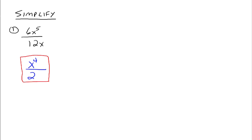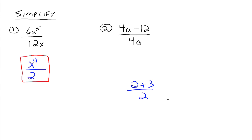Now, what about 4a minus 12 over 4a? The most common error made is to say the 4a's go away and you're just left with negative 12. That is the most common error. We cannot do that — you just don't cancel those 4a's out. Think of it this way: if you had 2 plus 3 divided by 2, can we just cancel those 2s and be left with 3? No, because following the order of operations we need to do 2 plus 3 first, giving us 5 over 2.